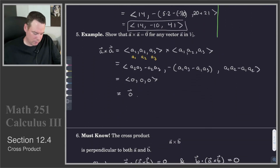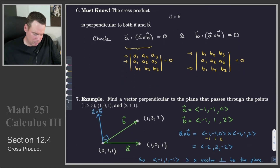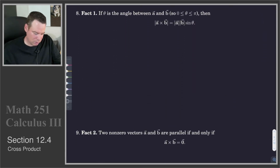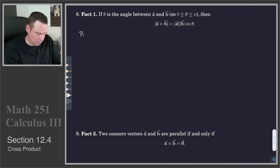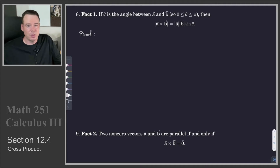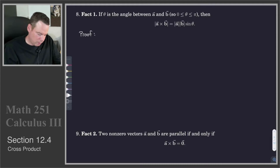What we are doing now is verifying this result in a couple of steps. The first step establishes the connection between the magnitude of the cross product and sine theta, and the next step draws the connection to the parallelogram area. So let's go ahead and prove this. We'll start with the left-hand side, the length of A cross B — specifically, I'll start with the square of that.